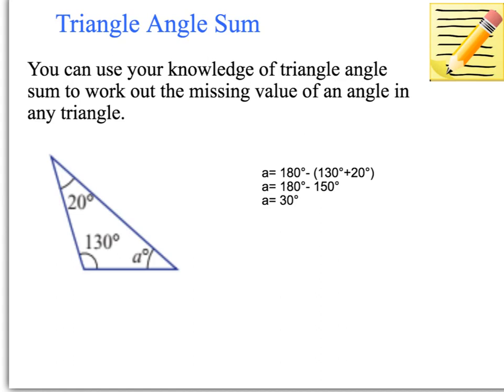You can use your knowledge of triangle angle sum — that all angles in a triangle add to 180 degrees — to work out the missing value of any angle in any triangle. So here, you've got a triangle with 130 degrees and 20 degrees, and we need to find out what A equals. We can just take those two angles that we know and subtract them from 180 degrees, and that leaves us with 30 degrees. So this angle here equals 30 degrees.